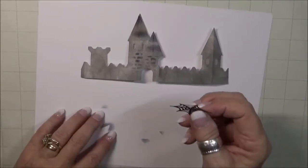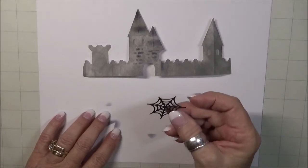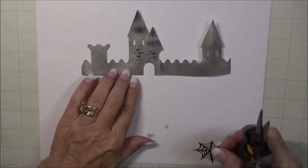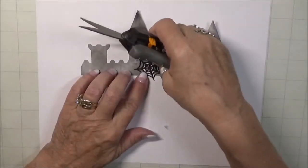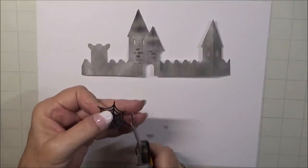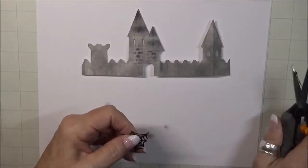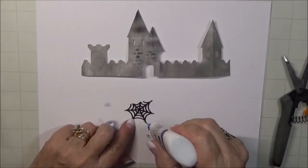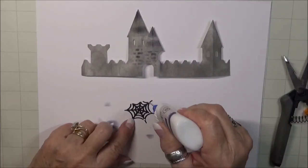I decided that a cobweb would be just perfect for the door. So I cut a black one out earlier, and now I'm going to place it where I think I want it. Just get a little idea there. And then I'm going to cut it to fit. This cobweb came from Karen's Halloween Scenes die set, and it's just the perfect size for this door.